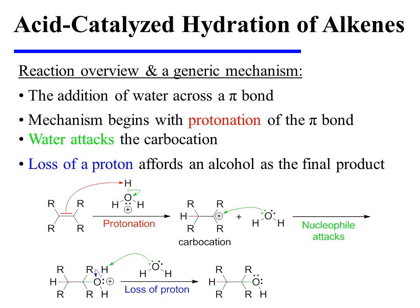The acid-catalyzed hydration of alkenes involves the addition of water across a pi bond. The mechanism begins with the protonation of the pi bond, which results in a carbocation intermediate that is attacked by water in the second step. An oxonium ion is thus generated, and the oxonium ion loses a proton to the medium to afford an alcohol as the final product.